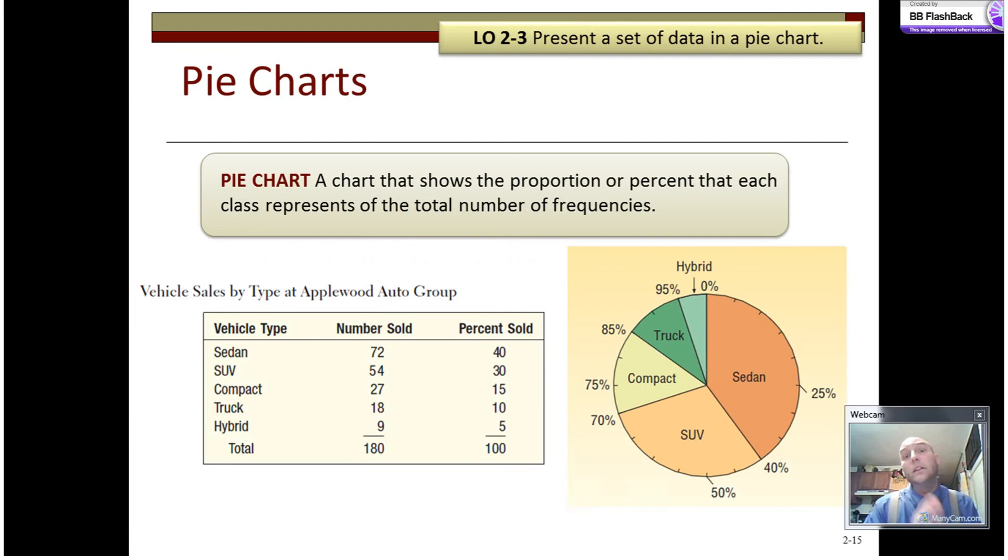Pie charts are really useful for describing relative frequencies or proportional frequencies. And here I said there were five vehicle types, a total of 180, 72 of which were sold as sedans, which is 40%. You add all these up and you get 100%. A pie is 100% of the pie and that's what you see over here is 100%. This sedan proportion right here is 40%. Pie charts are used for relative frequencies or proportions.